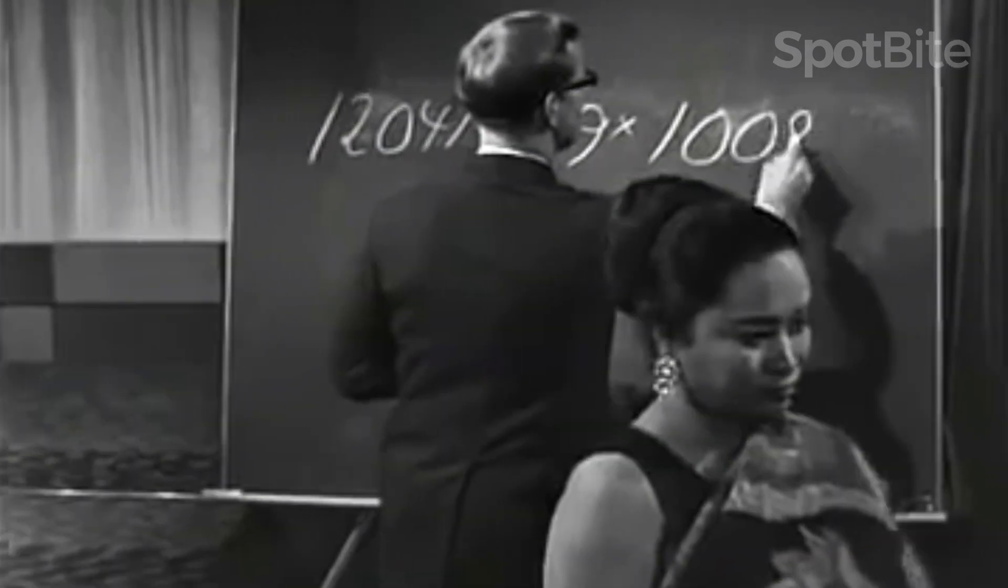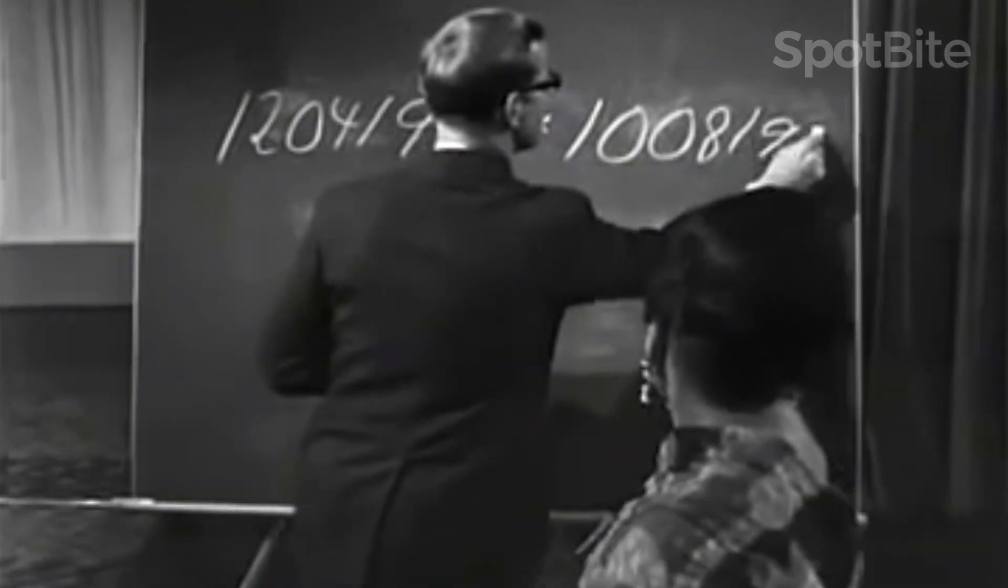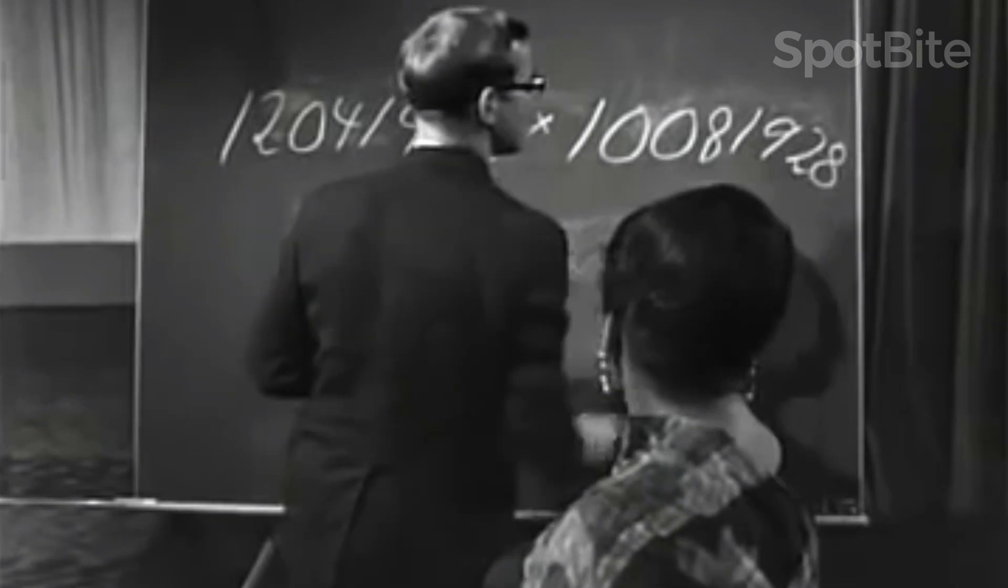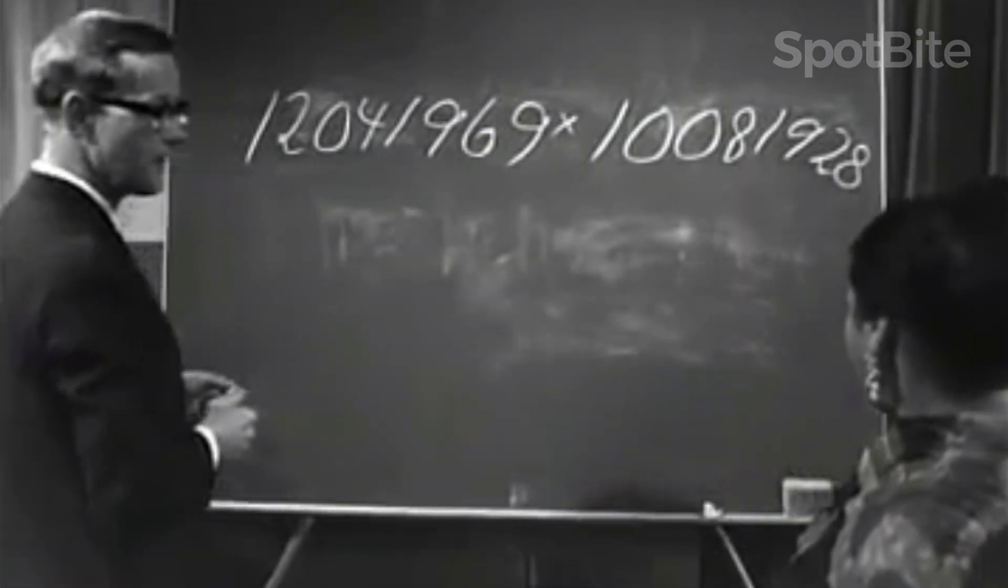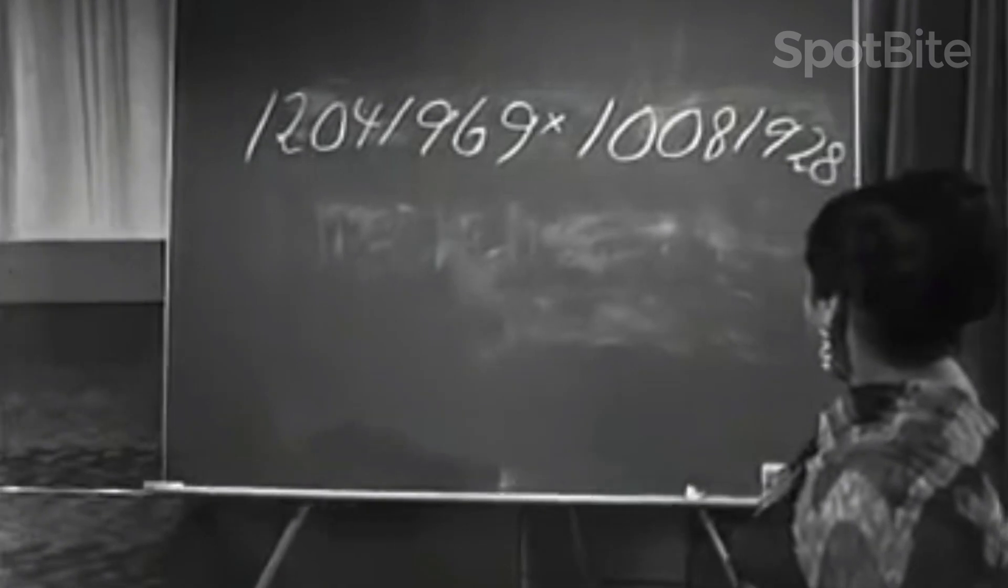9, 8, 8, 9, 8, 9, 8, I'll try. 1, 2, 0, 4, 1, 9, 6, 9, multiplied by 1, 0, 0, 8, 1, 9, 2, 8.